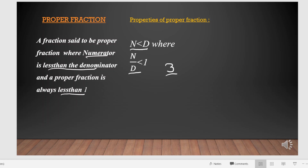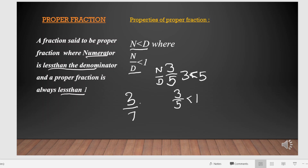For example, 3 by 5 is a proper fraction because 3 is less than 5, where 3 is the numerator and 5 is the denominator, and the value of 3 by 5 is also less than 1. Similarly, 3 by 7 is also a proper fraction because 3 is less than 7, and the value of 3 by 7 is also less than 1.